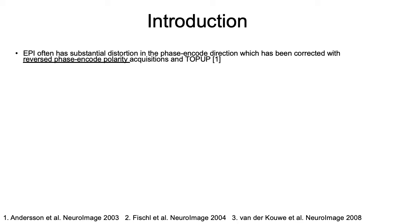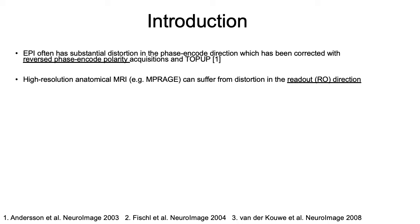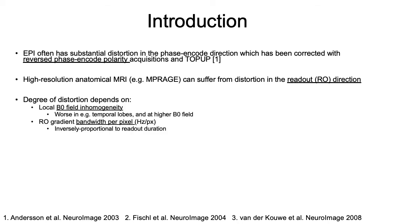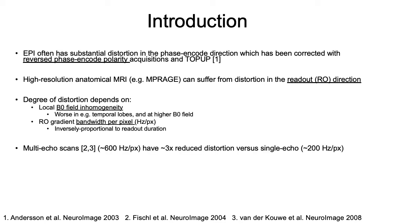We've seen that EPI distortion can be corrected with reversed phase-encoding polarity acquisitions and top-up. Anatomical MRI can also have distortion, but now in the readout direction. The amount of distortion depends on the local B0 field inhomogeneity and the readout gradient bandwidth per pixel.